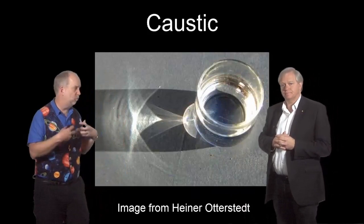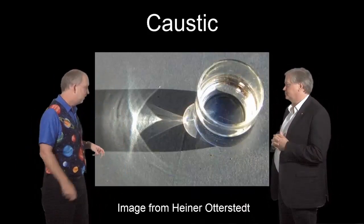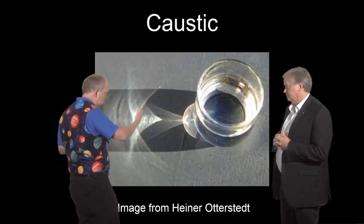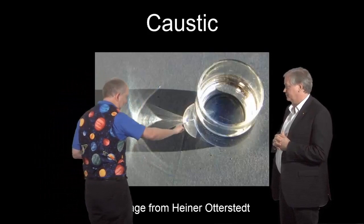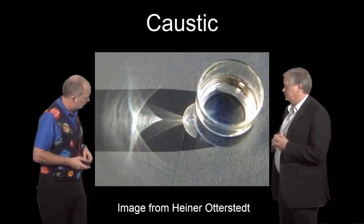So generally whenever you shine light through any sort of distorting lens, instead of getting a fuzzy image you get images with rather sharp lines like this one and this one and this one and these sharp lines are the caustics.